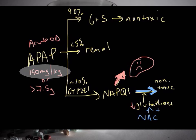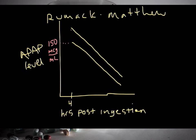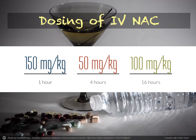There is a pattern you can use to your advantage to remember this — the Rule of 150. Going back to what one might consider a toxic dose of acetaminophen, 150 milligrams per kilogram is one commonly accepted figure. When we check our four-hour acetaminophen level and see that it's at 150 micrograms per milliliter, we know we should start N-acetylcysteine. And our initial dose of IV N-acetylcysteine is 150 milligrams per kilogram over one hour — hence the Rule of 150.